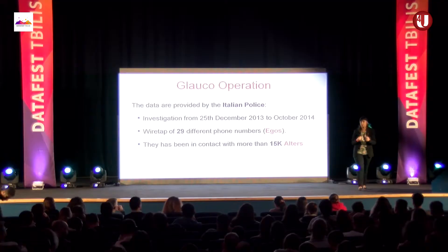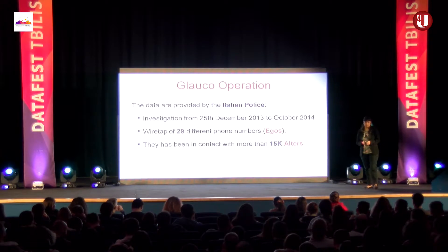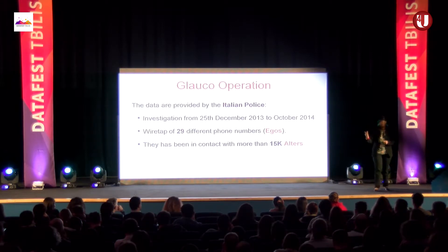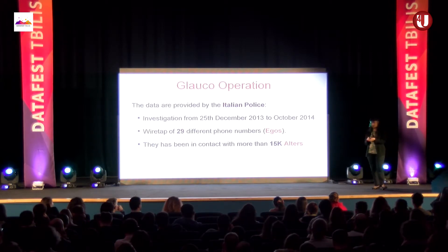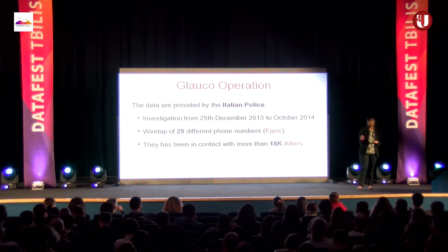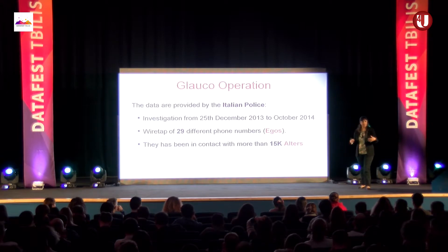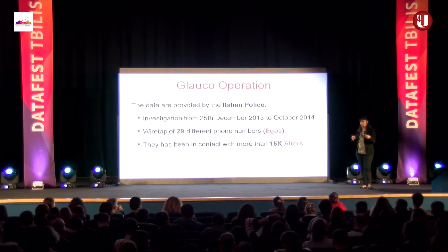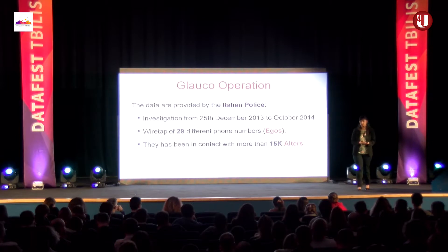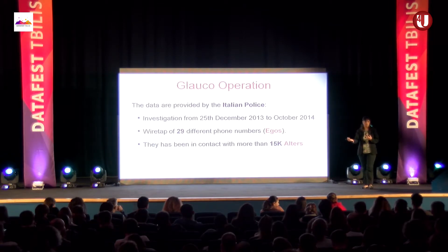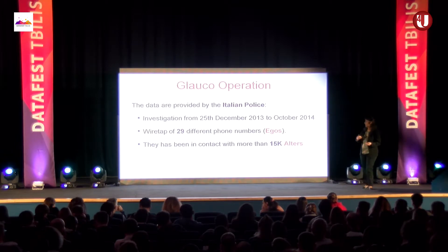These 29 phones were in contact with more than 15,000 other people. We call the 29 wiretapped numbers 'egos' and the numbers they called 'alters.' The egos may call anybody — family, friends, potential clients, or other smugglers. Our goal is to identify who the smugglers are among all these contacts. We want to discover the criminals, not the victims.